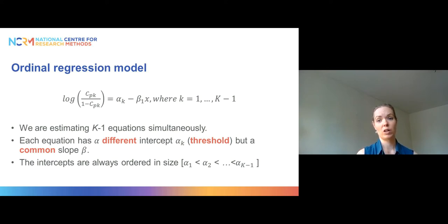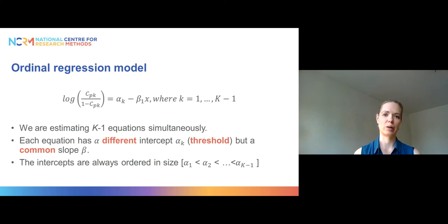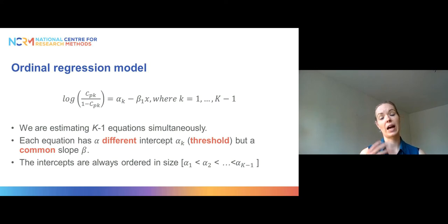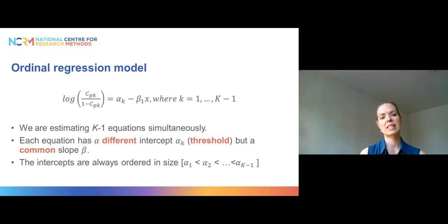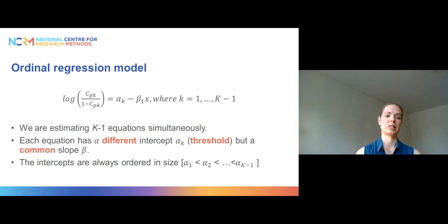On the left-hand side of the regression equation we have the logarithm of the cumulative odds. On the right-hand side we have an intercept and a slope — here we only have one explanatory variable. Like a multinomial model, the ordinal model estimates k minus 1 equations simultaneously. So with three outcome categories we estimate two equations. The key difference from a multinomial model is that while each equation has a different intercept, the slope is exactly the same in every equation. The intercepts are always ordered in size, with the first intercept lower than the second, and so on.